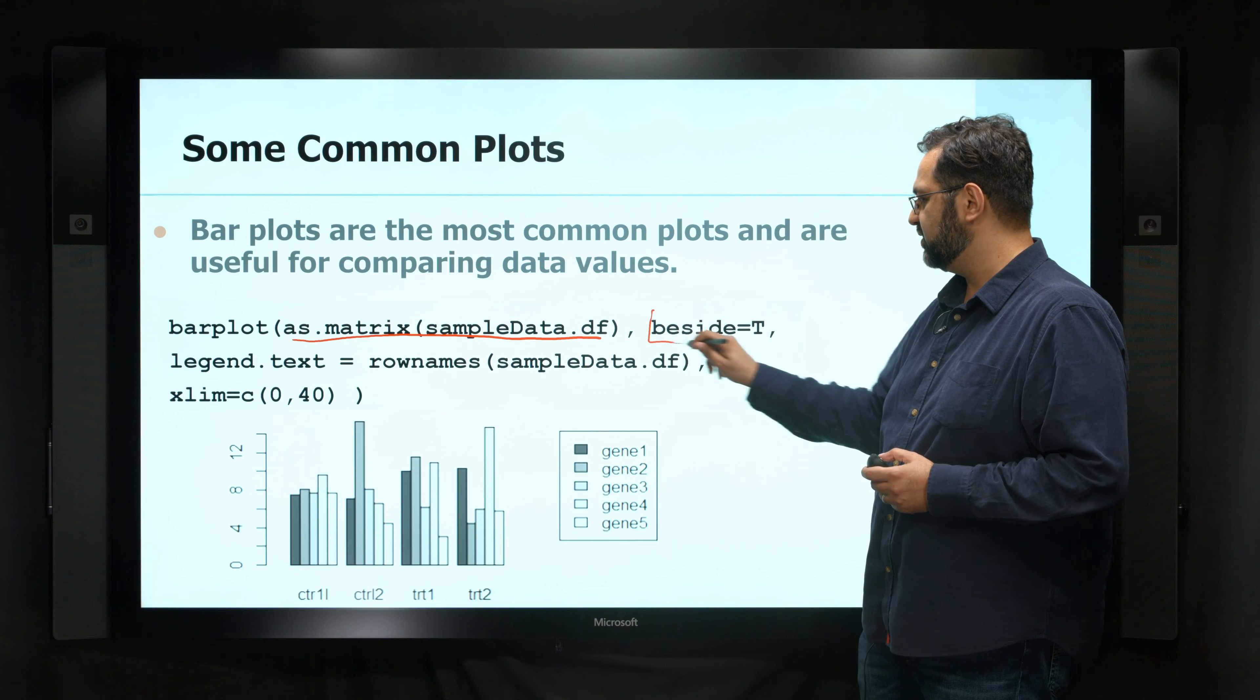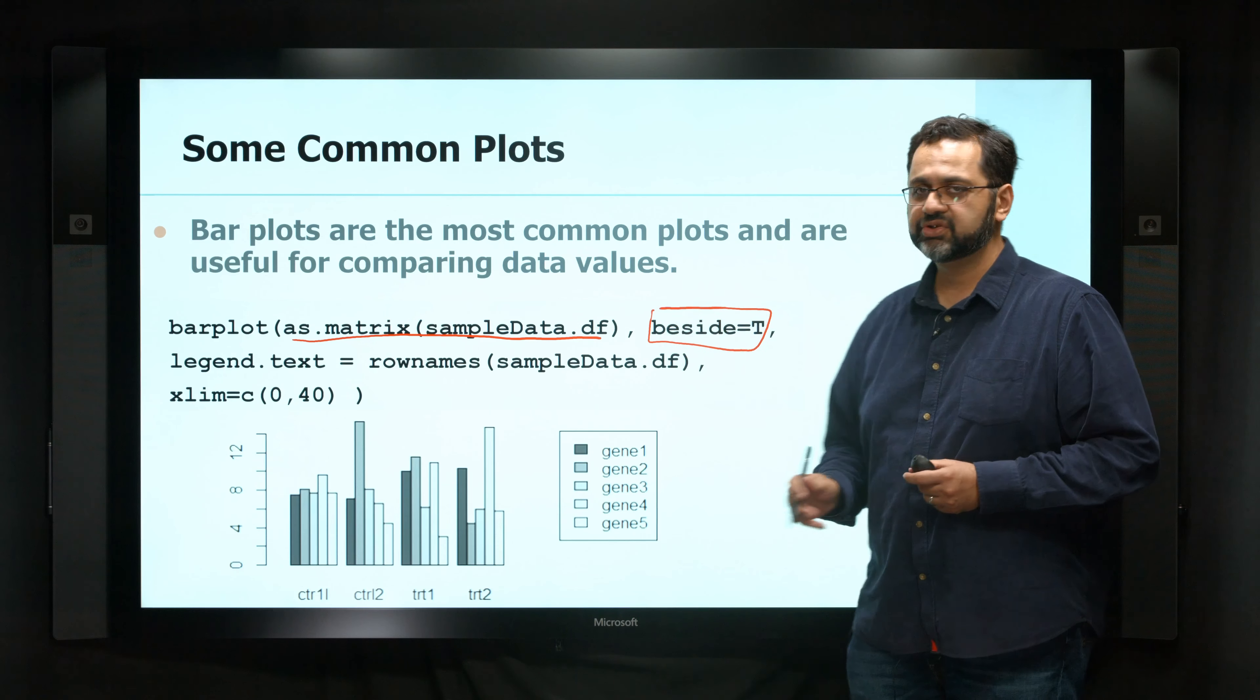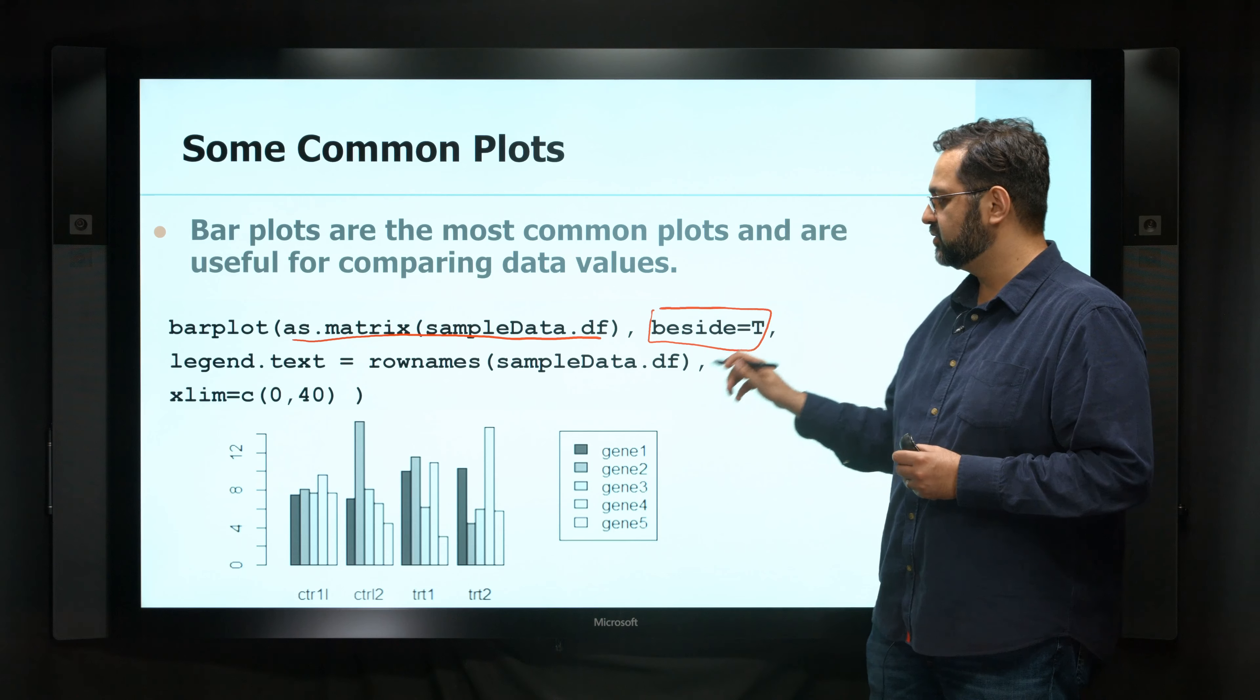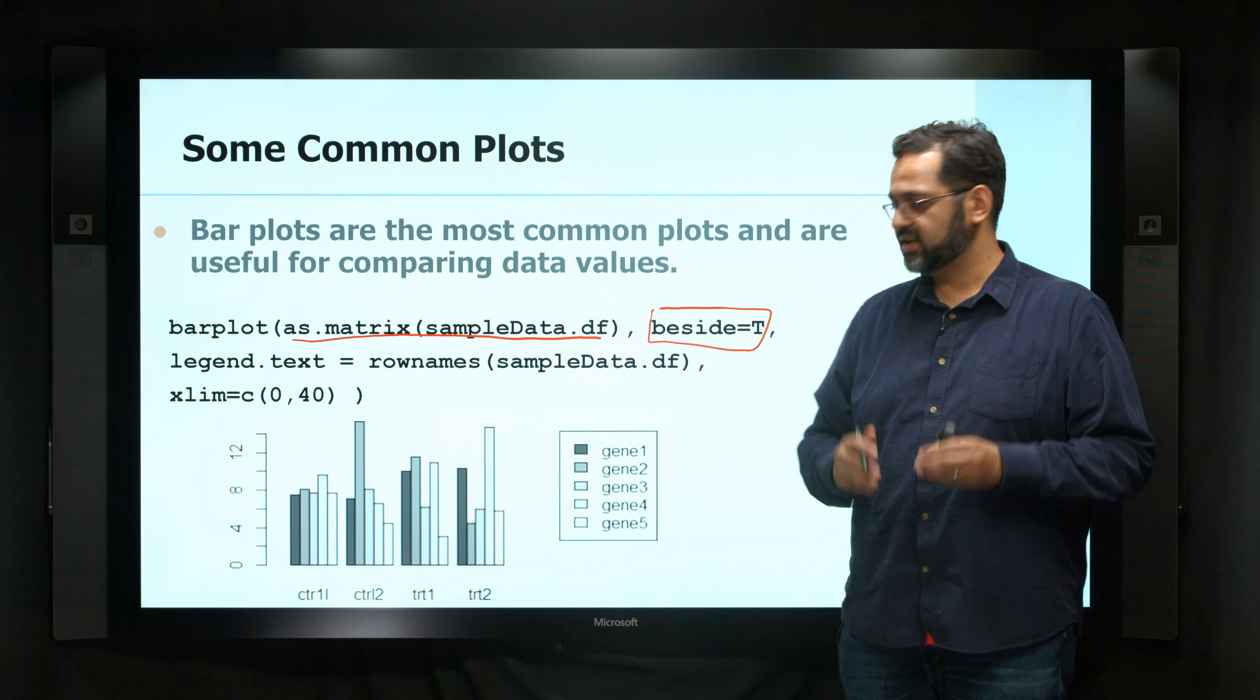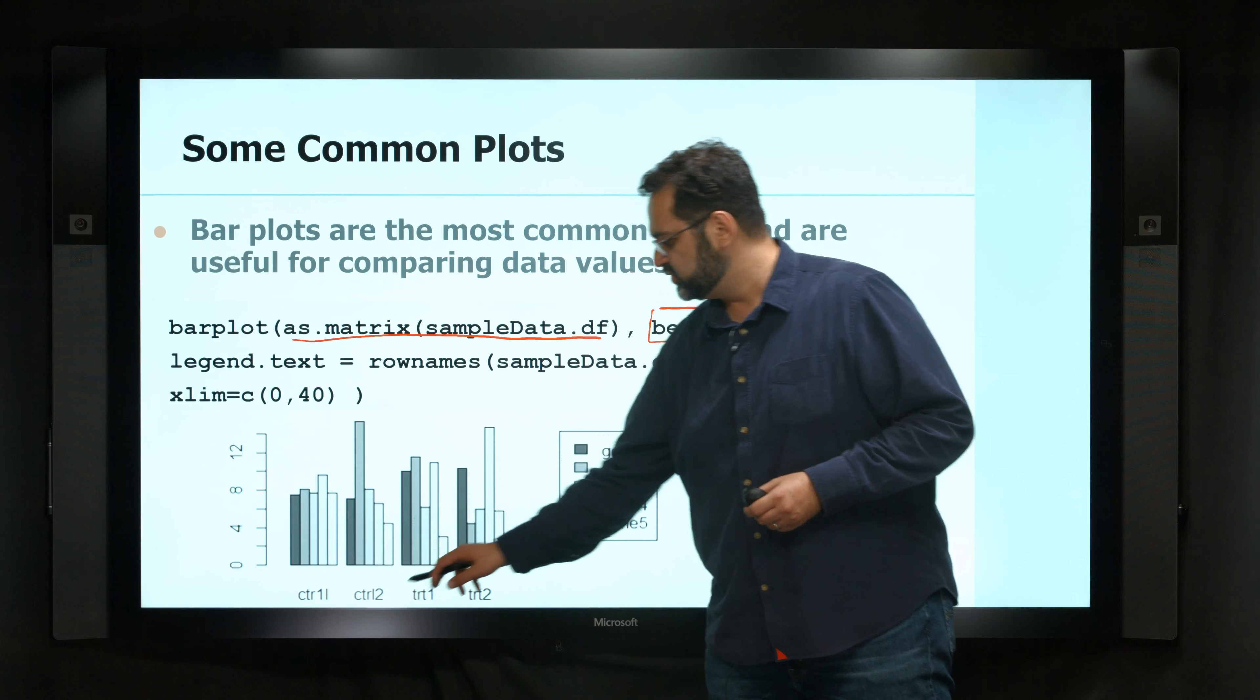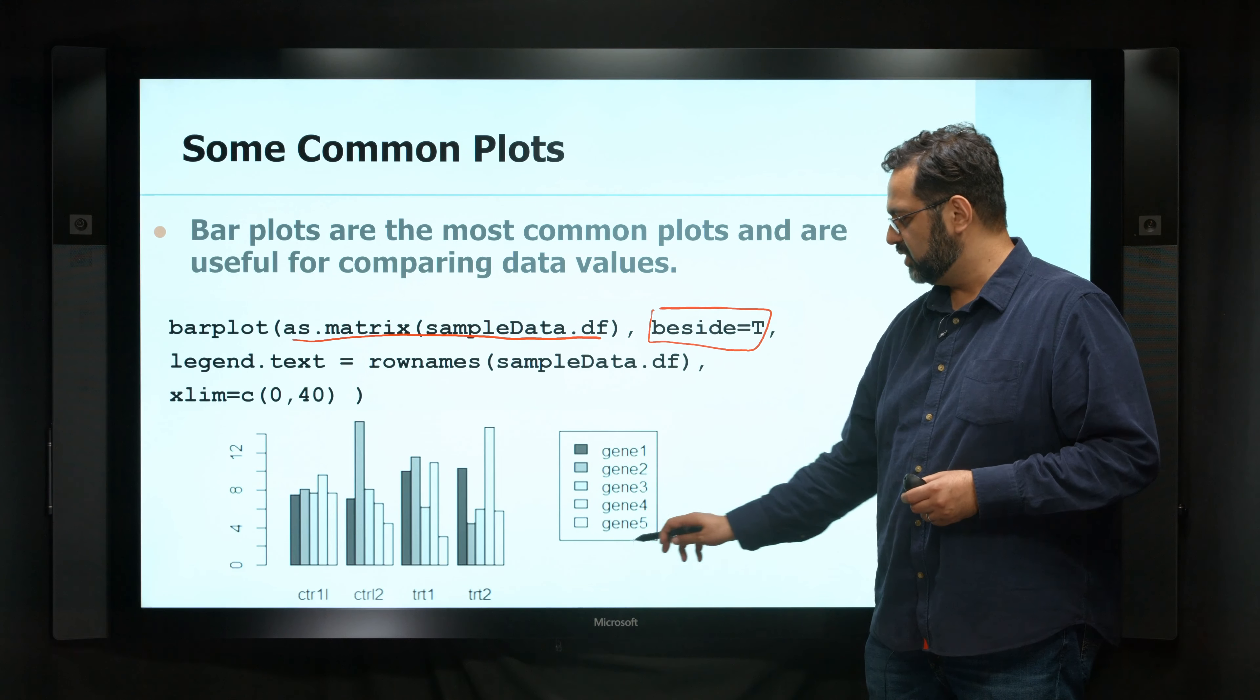And here's an option that's very helpful. So instead of trying to create all of them on top of each other, I've actually told it to create all the values side by side. So here it has gene 1, 2, 3, 4, 5 for control, treatment, and so on.